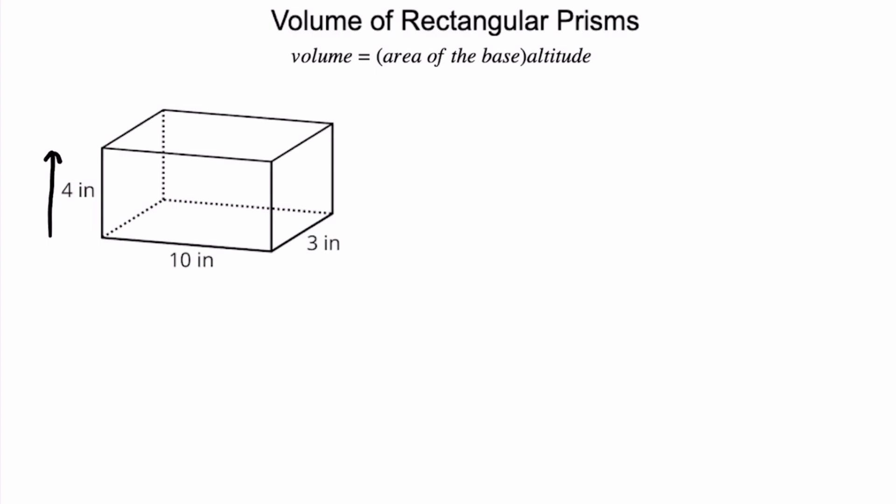Our base that we happen to look at right here is this rectangle. If we were to find the area of that base, that's the same thing as the length times the width, and then that's going to be times the altitude. So if you have a rectangular prism: length times width times the altitude.